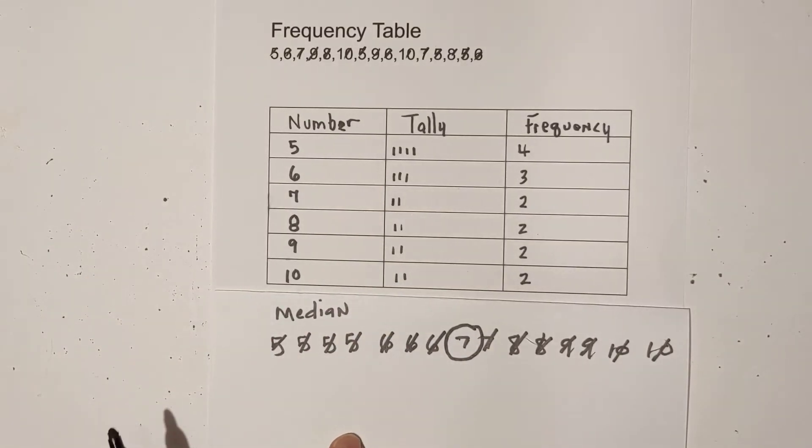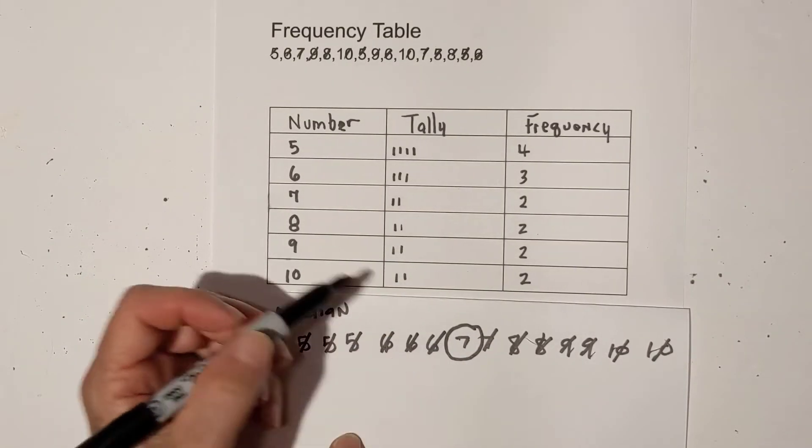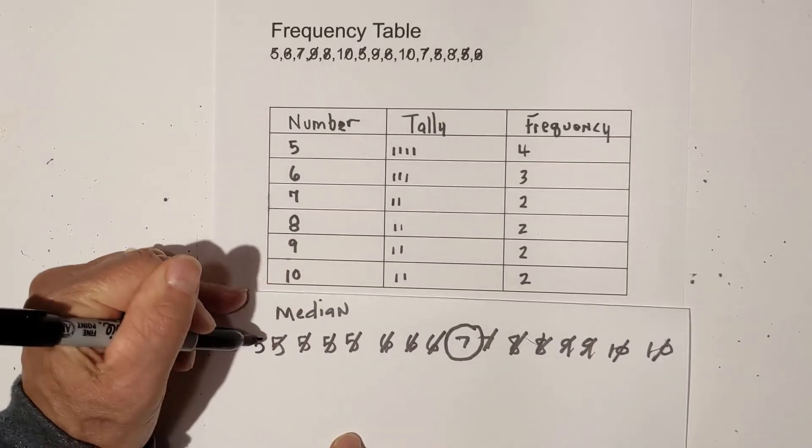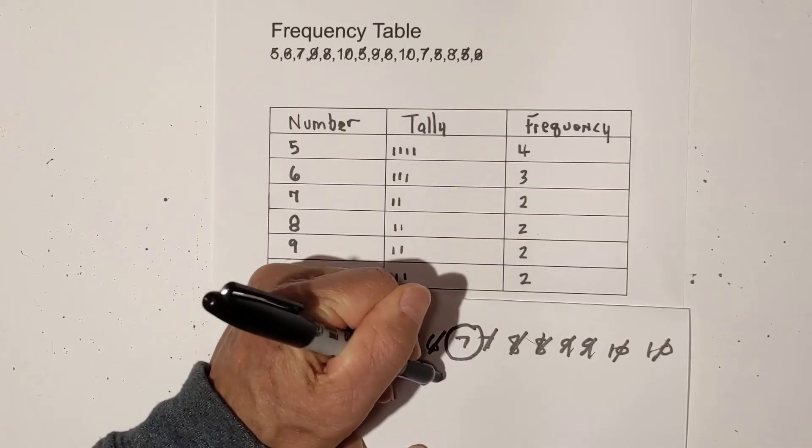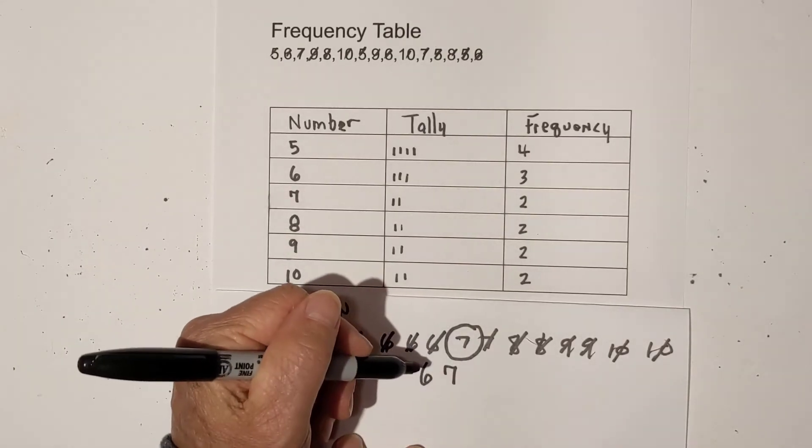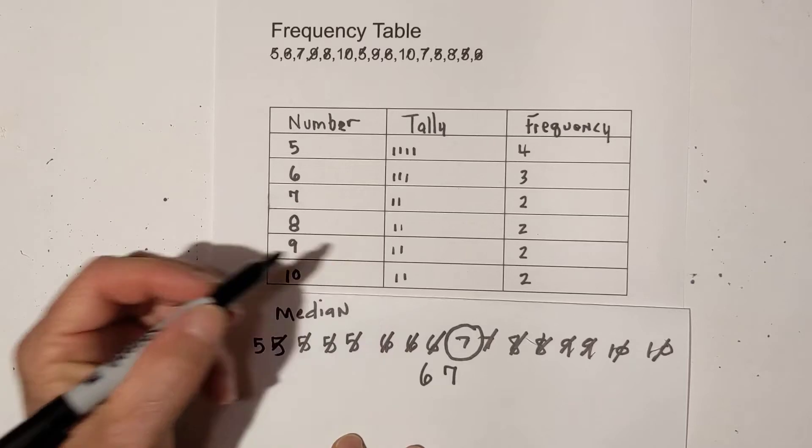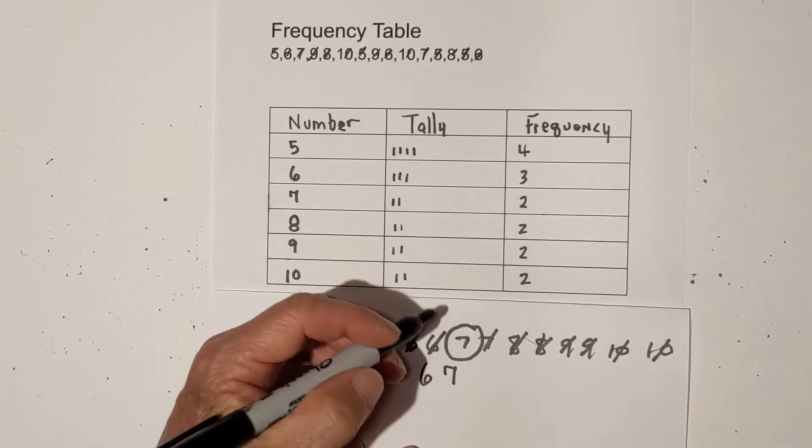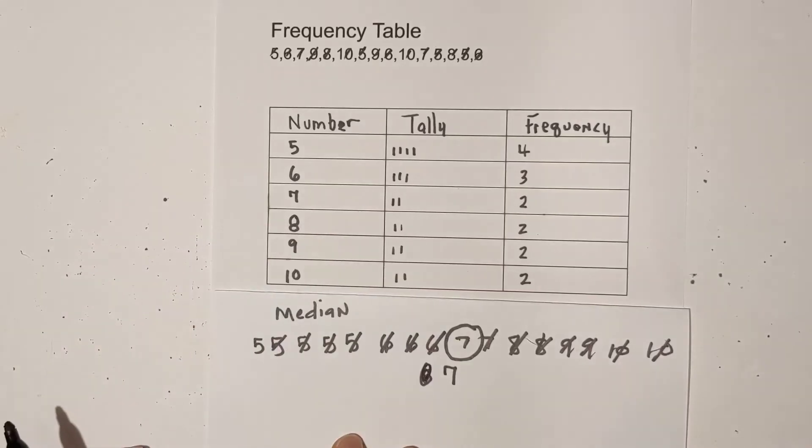Now, what if you have an even number and you get to the middle and there are 2? Say, for instance, if I added a number 5 here, I would get to 6 and 7. So what you do is you take the average of those 2 if you have an even number. But in this, I have an odd, so it works out to where 7 is the median.